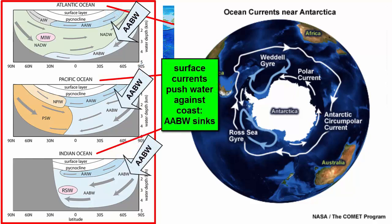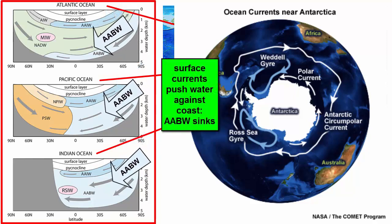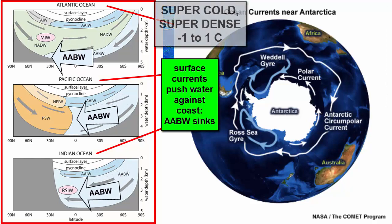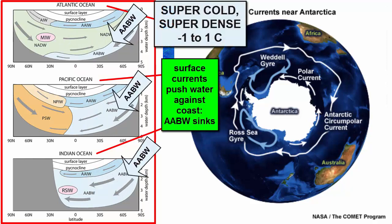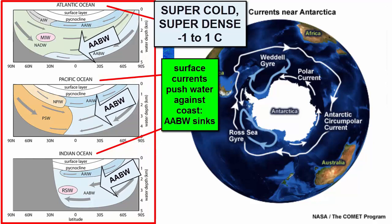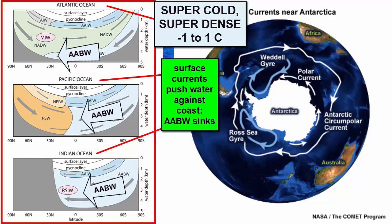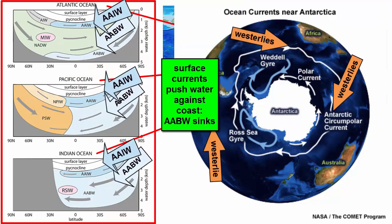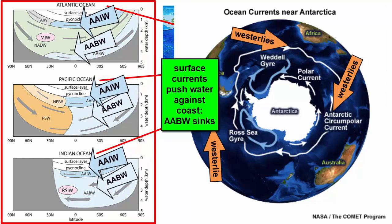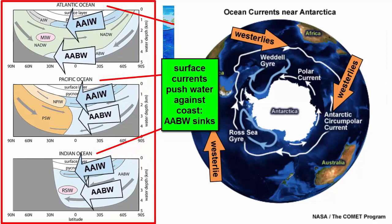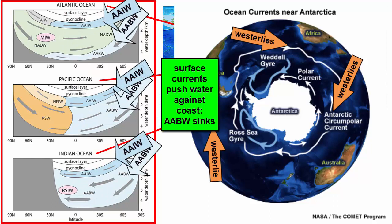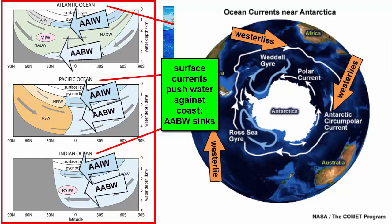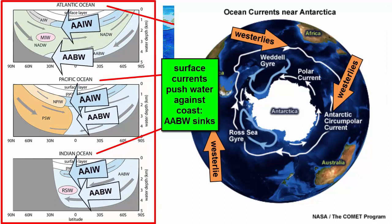The deepest, densest water in all the world's oceans is the Antarctic Bottom Water. It is densest because it is the coldest. Its salinity and proximity to freezing temperatures allow it to cool below the freezing point of fresh water, averaging minus one to one degree Celsius. The Antarctic Circumpolar Current is a surface current that isolates Antarctica from surrounding weather and current systems, allowing it to get colder than almost anywhere else on the planet. That cold water then feeds the deep and intermediate waters of all the world's oceans.